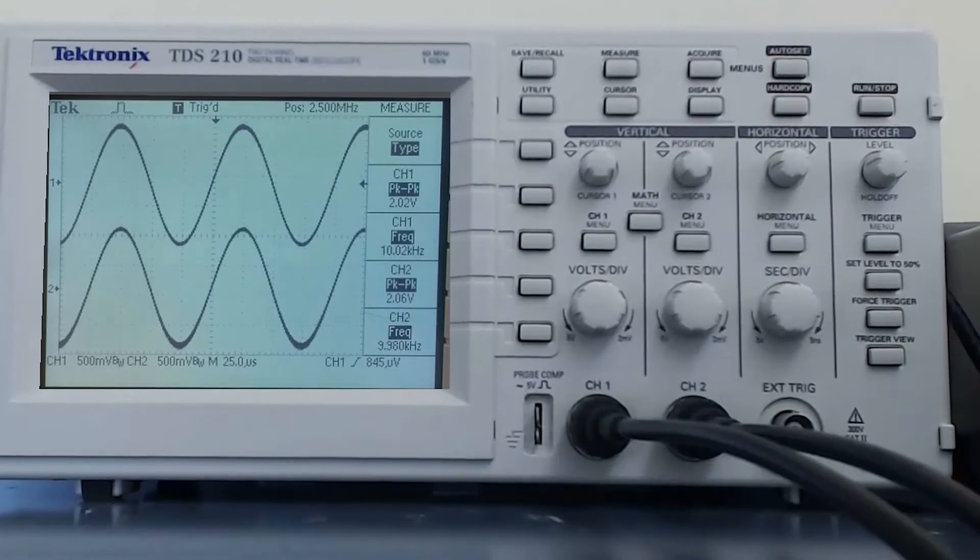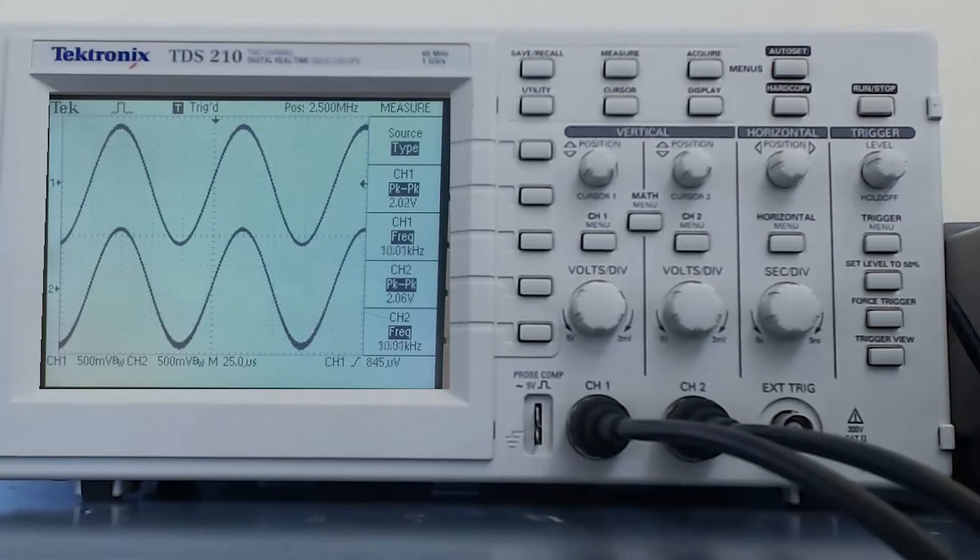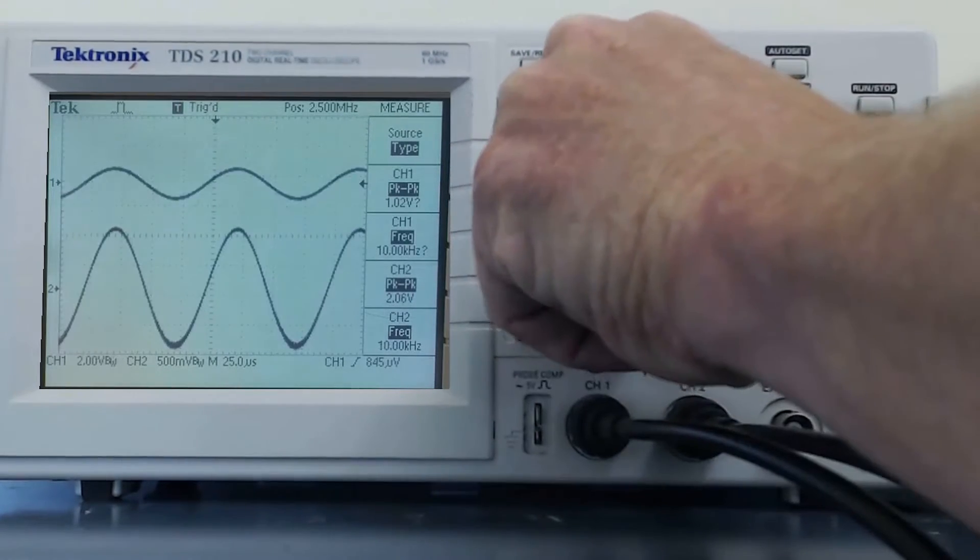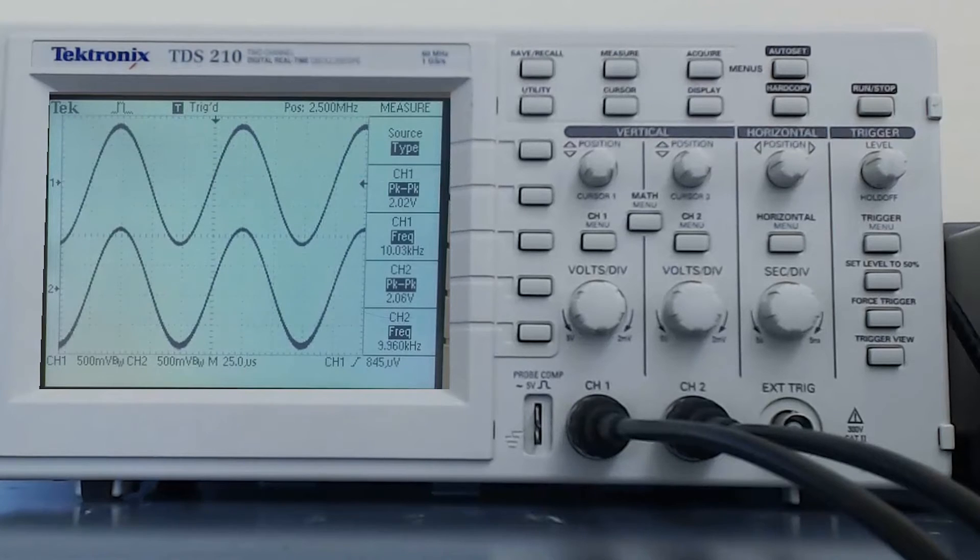For any of the measure functions to work, at least one entire waveform must be present on the screen. If I adjust the volts per division so that the top of the waveforms is off the screen, a question mark appears on the peak-to-peak voltage. This means the oscilloscope does not know what the peak-to-peak value is.